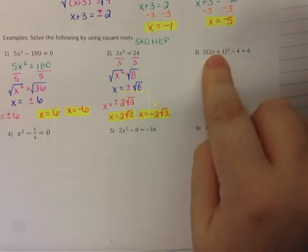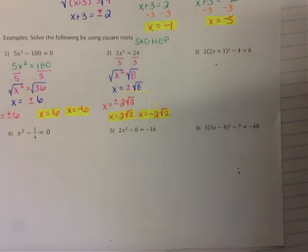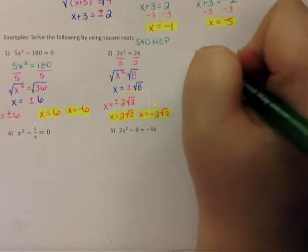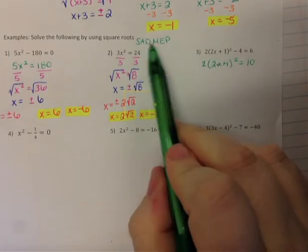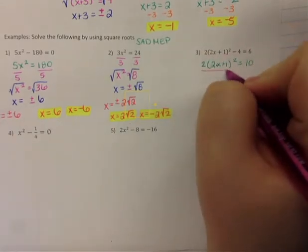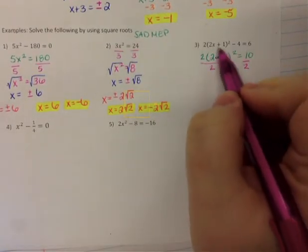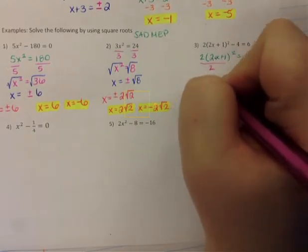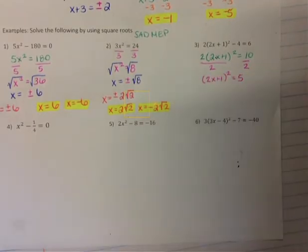Next problem. This actually looks like the example problem from the first video. I just want to get my x by itself. This looks very similar to vertex form. I want to add and subtract away first — I can't touch my parentheses, so I add the 4 over. So I have 2(x + 1)² equals 10. Now I want to divide away, so I divide both sides by 2. The 2 inside the parentheses cannot be touched since it's inside — only the outside 2 cancels. So I have (2x + 1)² equals 5.